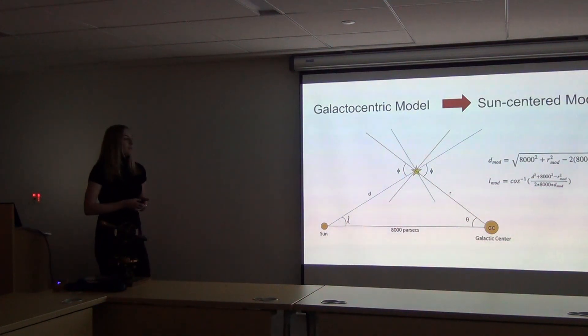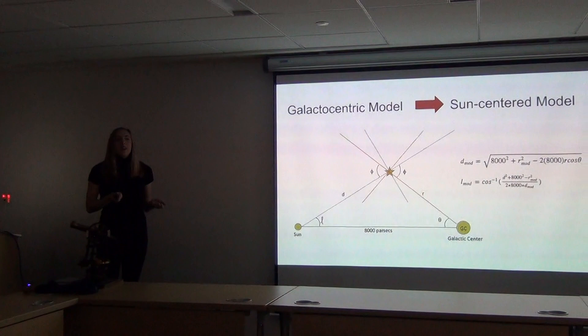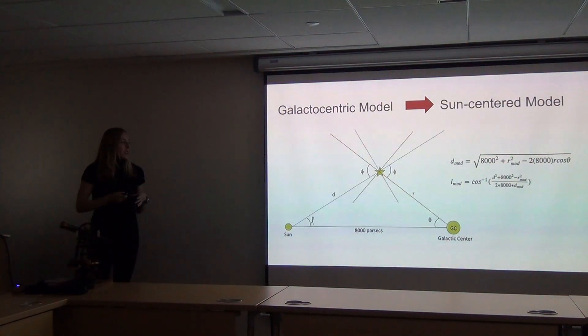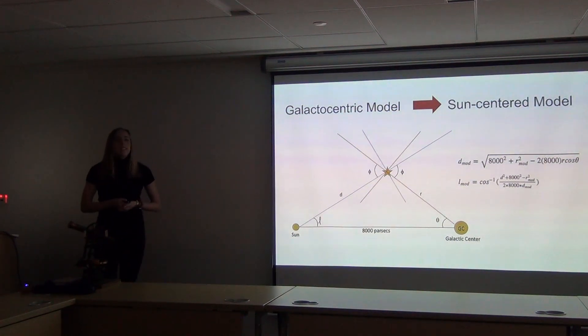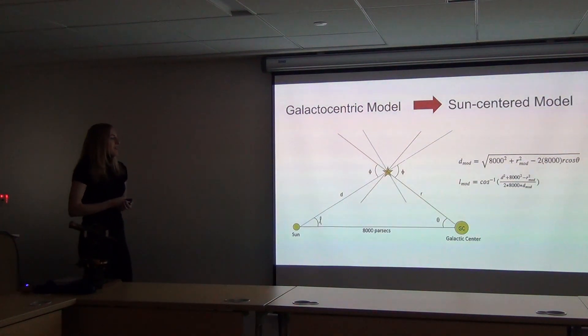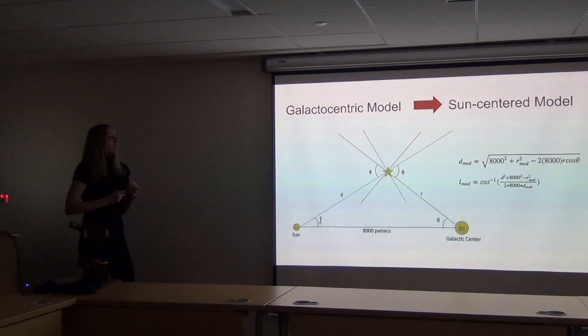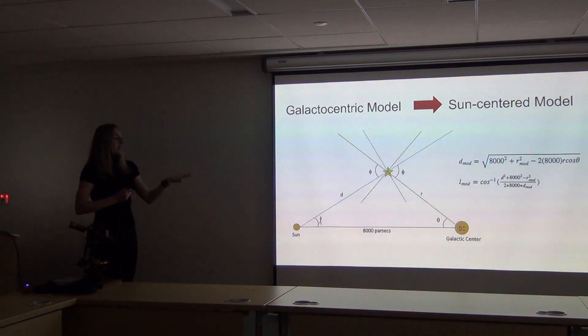But we know that Gaia is sun-centered because it's orbiting our sun. So we had to transform our galactic-centric models through this sun-centered coordinate system using just simple geometry, a lot of cosines. We could generate these L and D values, L being that angle from the sun, and D being the distance from this given star to our sun. So now we can kind of see what Gaia sees with these models.